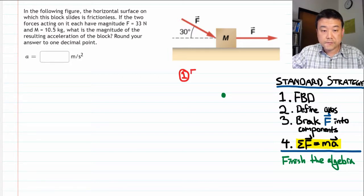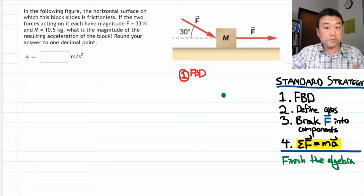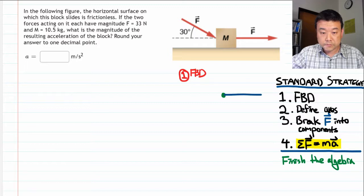So let's identify all the forces. There are some easy ones. The problem gave us two forces. One applied force of magnitude F. And another applied force of the same magnitude but applied at an angle, 30 degrees.